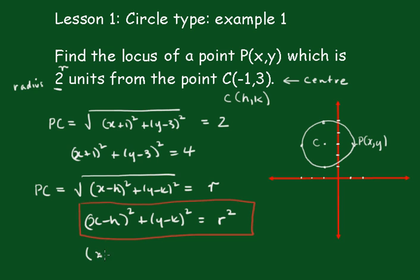It'll be x minus minus 1, or x plus 1, all squared, plus y minus 3, all squared, is equal to 2 squared, which is 4. To get your result.